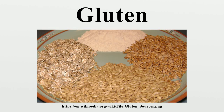Gluten forms when glutenin molecules cross-link to form a submicroscopic network attached to gliadin, which contributes viscosity and extensibility to the mix. If this dough is leavened with yeast, fermentation produces carbon dioxide bubbles, which, trapped by the gluten network, cause the dough to rise. Baking coagulates the gluten, which, along with starch, stabilizes the shape of the final product.